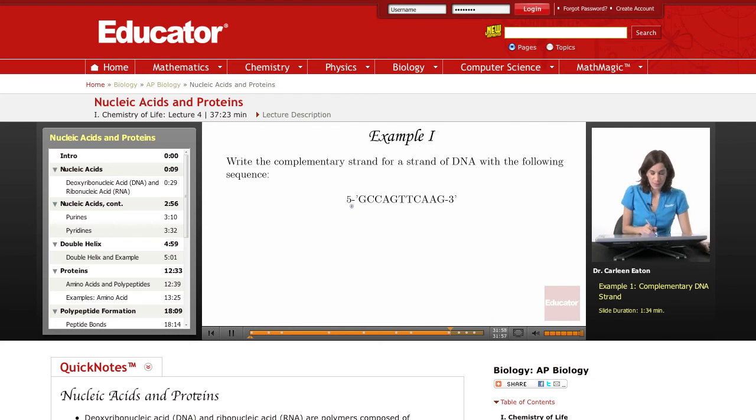This shows the 5' end and the 3' end, and then it shows a sequence GCCAGTTCAAG for DNA. These are the different nitrogenous bases.